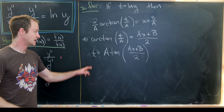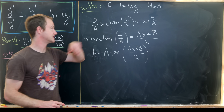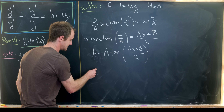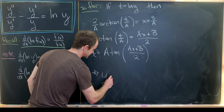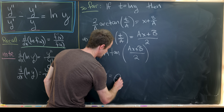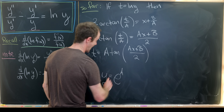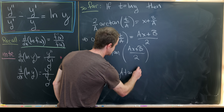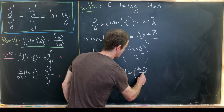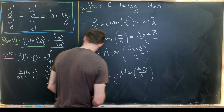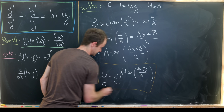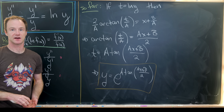Multiplying both sides by a gives t = a · tan((ax + b)/2). Finally, since t = ln(y), we have y = e^t, which gives us the final solution: y = e^(a · tan((ax + b)/2)). And that's a good place to stop.